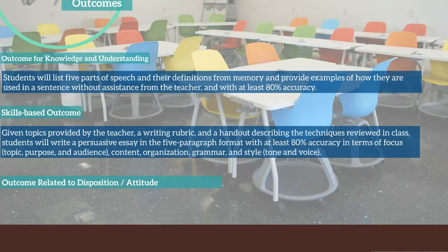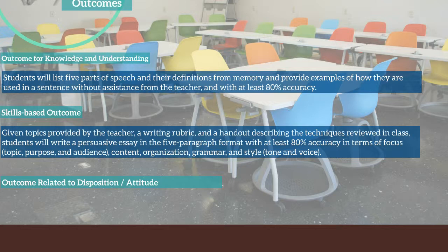Here's an example of a skills-based outcome. Given topics provided by the teacher, a writing rubric, and a handout describing the techniques reviewed in class, students will write a persuasive essay in the five-paragraph format with at least 80% accuracy in terms of focus, topic, purpose, and audience, content, organization, grammar and style, and tone and voice. This is in accordance with the SMART goal philosophy, and it can be differentiated for an English language learner, a gifted student, or a special needs student. All we would need to do is insert or remove some scaffolding from this outcome to make it specific to a particular learner.